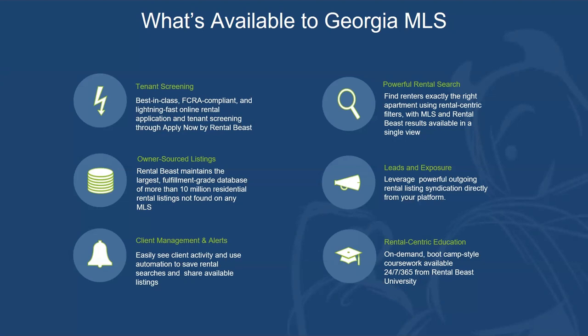With the free version of Rental Beast, you get a preview of those off-MLS rental listings — address, bedrooms, baths, square footage, date available, and so on. There is a paid product called Rental Beast Pro at $18 a month, which gives full listing details for non-MLS properties — but my goal here isn't to sell; I'm here to inform. You also get leads and exposure: when you add a rental listing into Paragon or Connect MLS, it automatically gets pushed to Rental Beast within 10–15 minutes and goes live on rentalbeast.com.